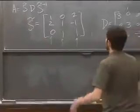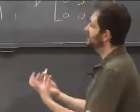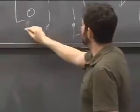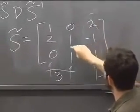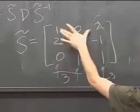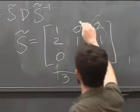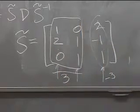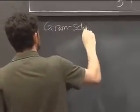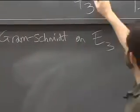By the spectral theorem, eigenspaces for different eigenvalues are orthogonal to each other. The eigenvector (2, −1, 1) for λ = −3 is automatically orthogonal to both vectors in the λ = 3 eigenspace — you can verify this quickly. But within the λ = 3 eigenspace we must apply Gram-Schmidt.